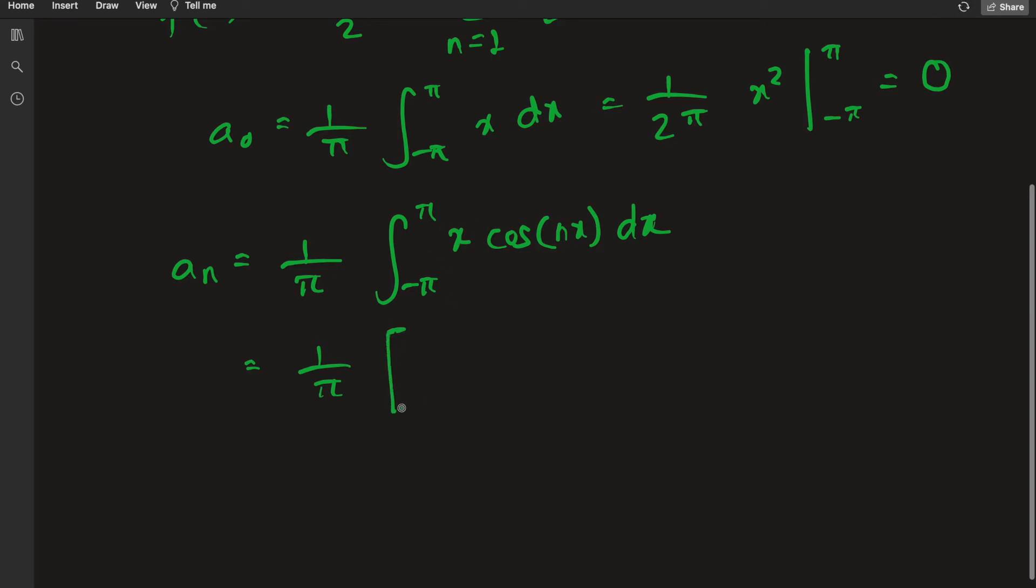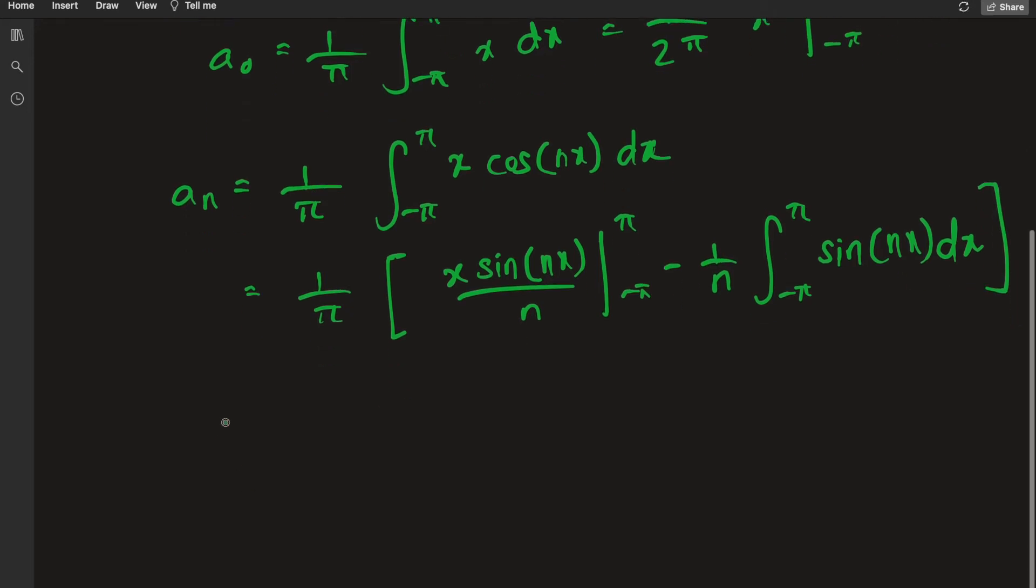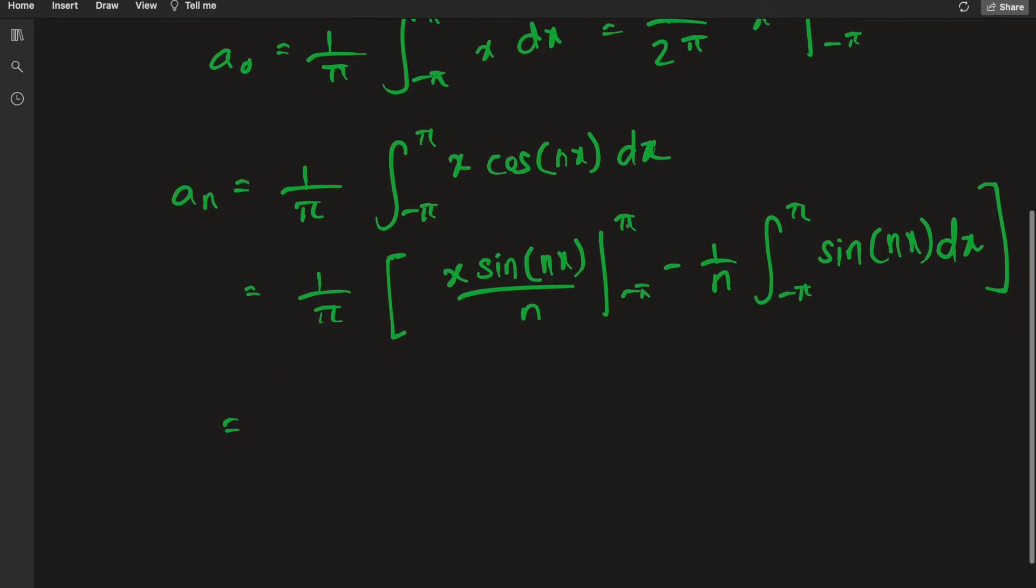So I get x sine of nx divided by n by the reverse chain rule, evaluated at π and negative π, minus 1 over n integral from negative π to π sine of nx dx. Sine of n times π or negative n times π is always going to be zero. Integral multiples of π, sine of that is zero.